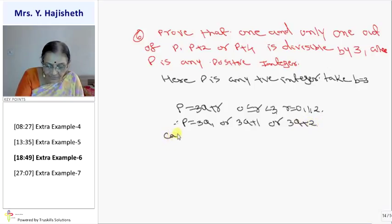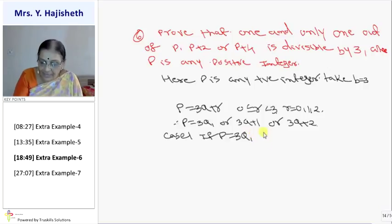Now case number 1. If p is 3q, suppose p is 3q, then this p is divisible by 3. P is 3q, then it is divisible by 3.